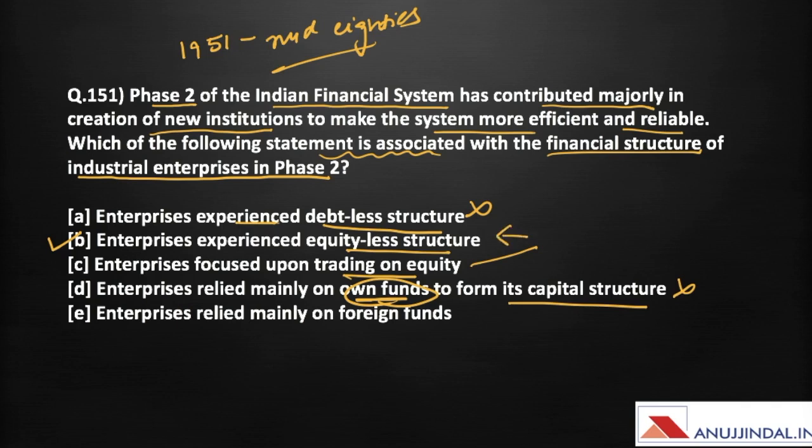Option E says enterprises relied mainly on foreign funds, which is also not true. Therefore, option B — equity-less structure — is the correct answer.